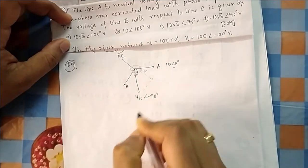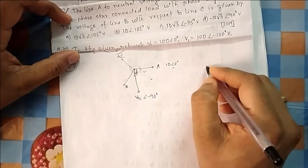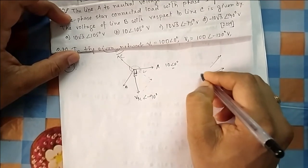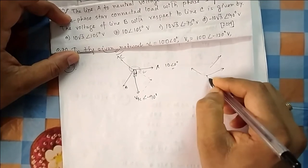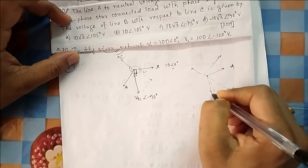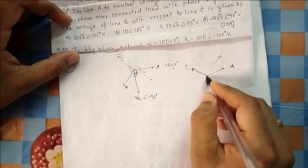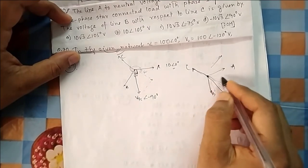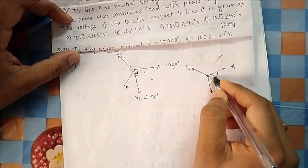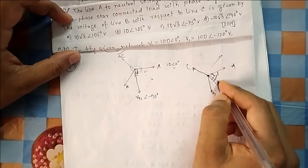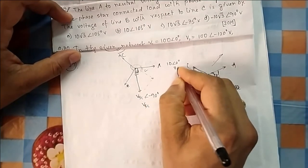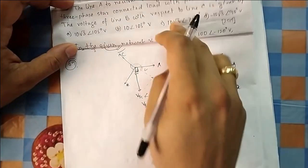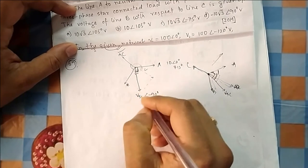Since the actual phasor A is at 15° rather than 0°, everything is rotated by 15°. VBC, which was at −90°, now shifts to −90° + 15° = −75°. The magnitude of VBC as a line voltage is 10√3. So VBC = 10√3 angle −75°. Only option C matches this.